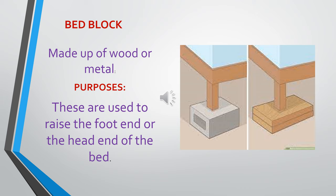Another comfort device is the bed block. It is made of wood or metal. Its main purpose is to raise the foot side or head side of the bed. Previously bed blocks were commonly used, but their use has reduced because nowadays we have beds that can be adjusted automatically. We can now raise the foot side or head side of the bed mechanically, which is why the use of bed blocks is now minimal.